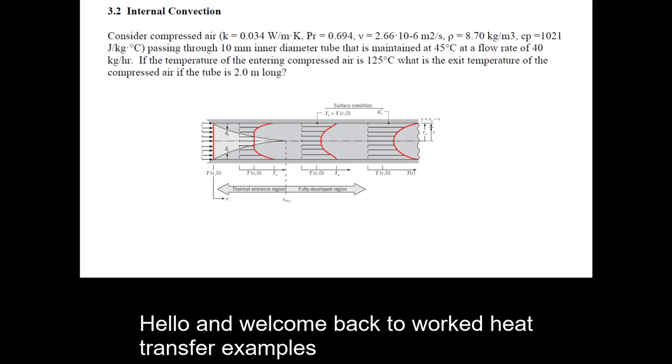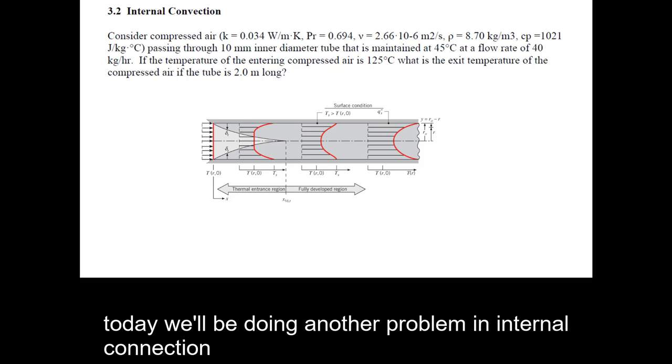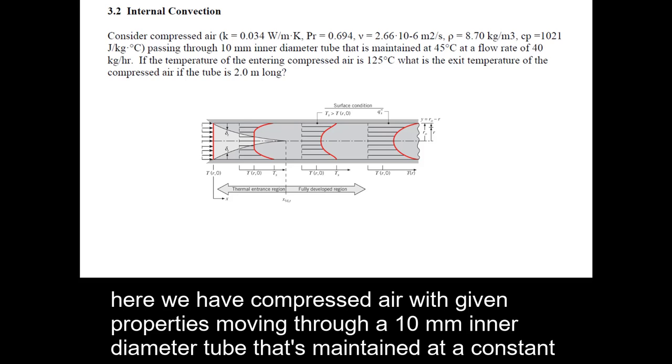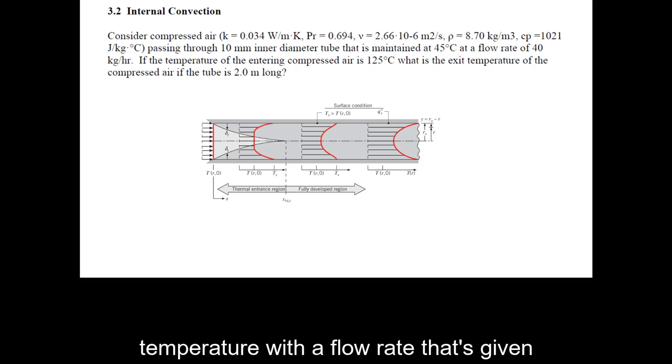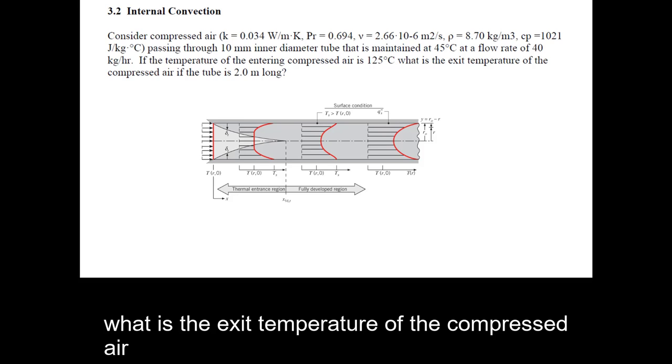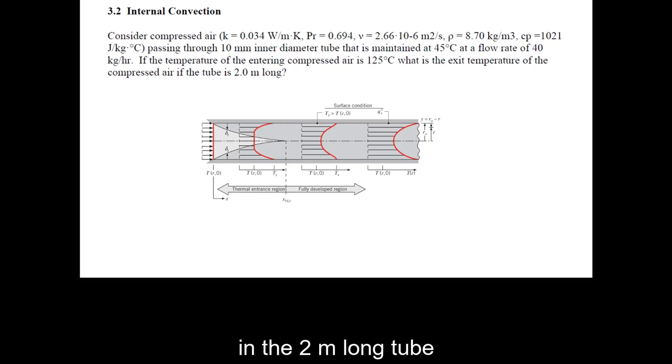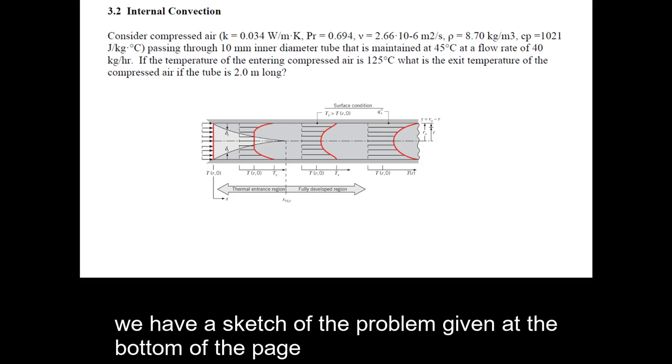Hello and welcome back to Worked Heat Transfer Examples. Today we'll be doing another problem in internal convection. Here we have compressed air with given properties moving through a 10 millimeter inner diameter tube that's maintained at a constant temperature with a flow rate that's given. If the temperature is entering at 125 degrees Celsius, what is the exit temperature of the compressed air in a 2 meter long tube. We have a sketch of the problem given at the bottom of the page.